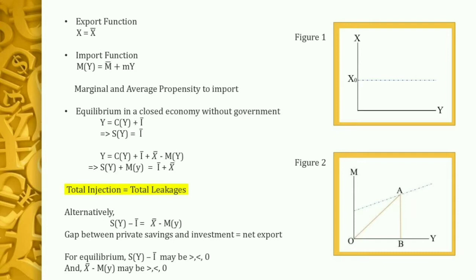The marginal propensity to import is a positive proper fraction lying between zero and one, similar to the marginal propensity to consume. As income rises, imports rise but less than proportionately. From this import function we can also derive the average propensity to import, which is M/Y. Figure two plots the import function with a positive vertical intercept representing M̄, and a positive slope representing the marginal propensity to import.